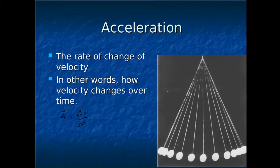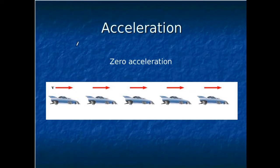Let's look at an example. This picture is a strobe image — a strobe photo where you flash a light a whole bunch of times and take a picture each time it flashes. This is a drawing of that, showing the position of a car each time the image is taken. Each one of these images is taken an equal amount of time apart — let's say each one is one second apart.